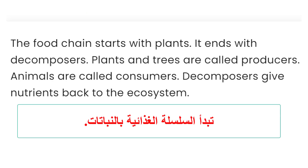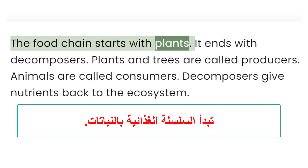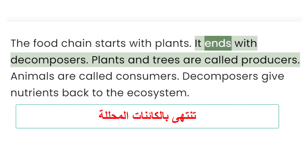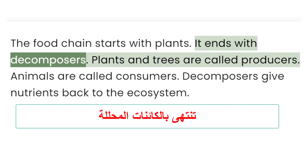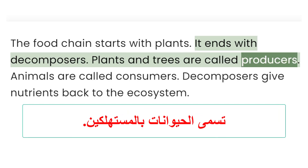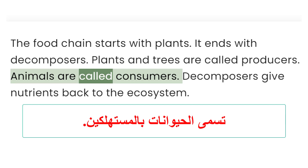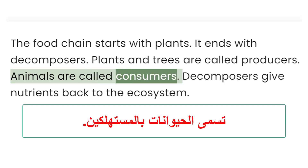The food chain starts with plants. It ends with decomposers. Plants and trees are called producers. Animals are called consumers.